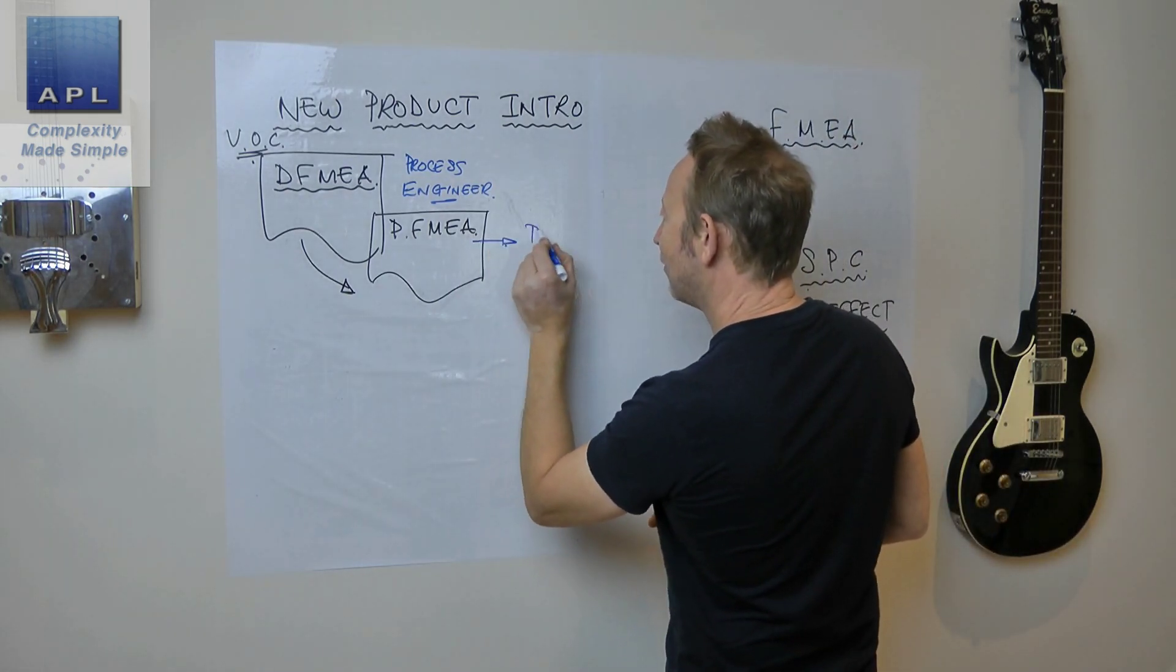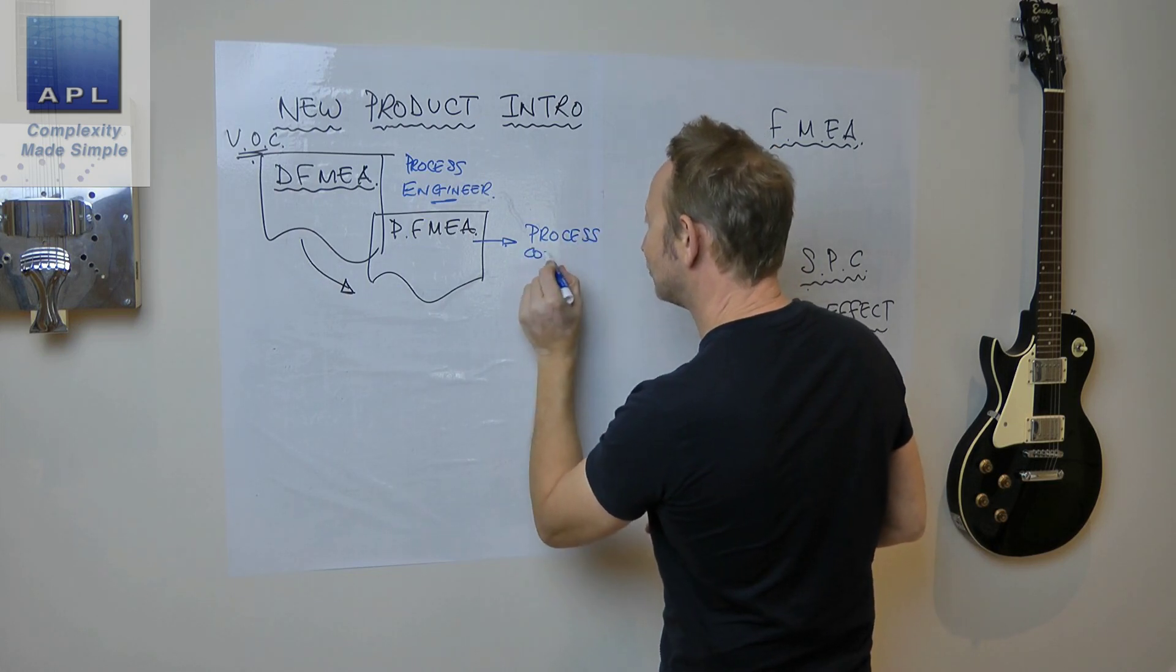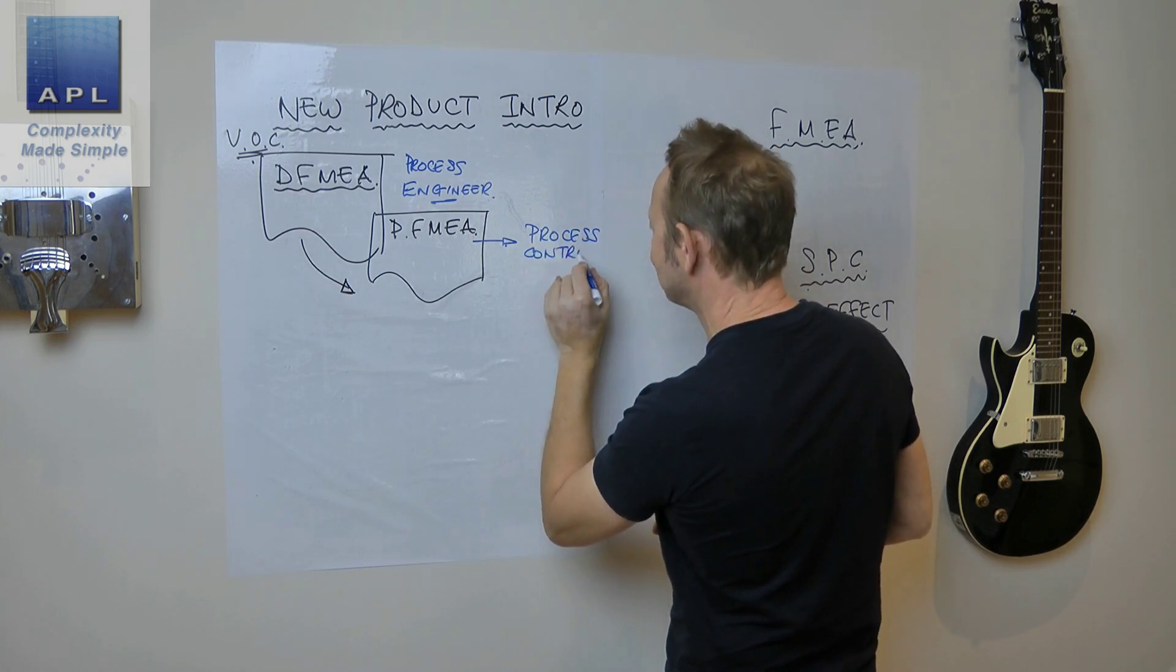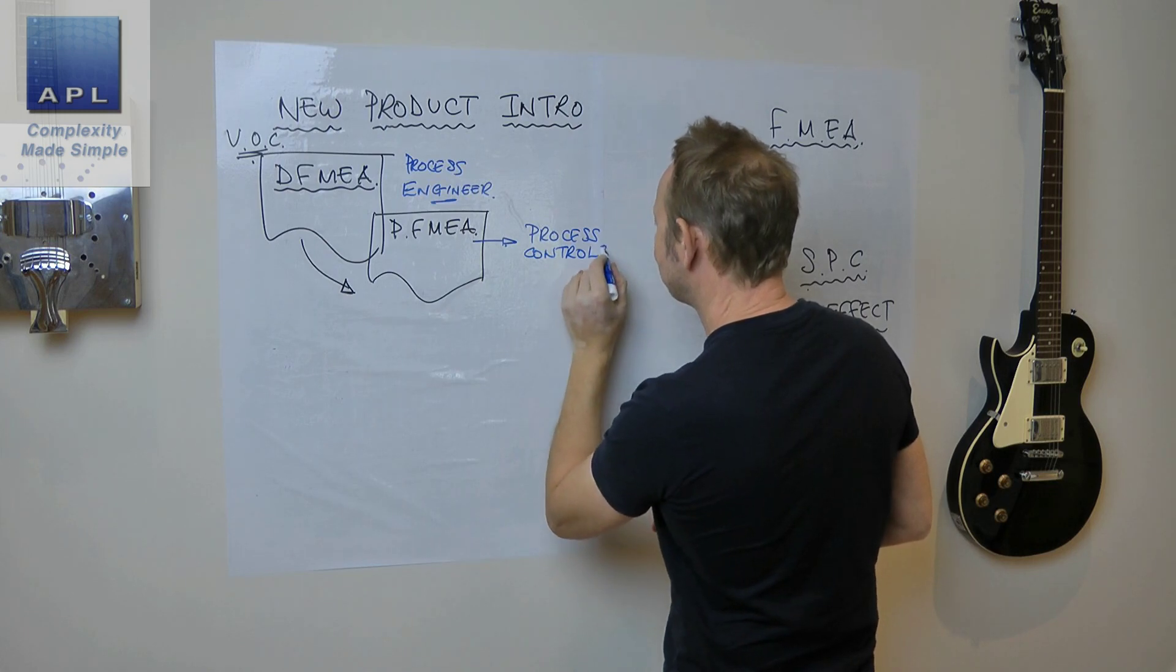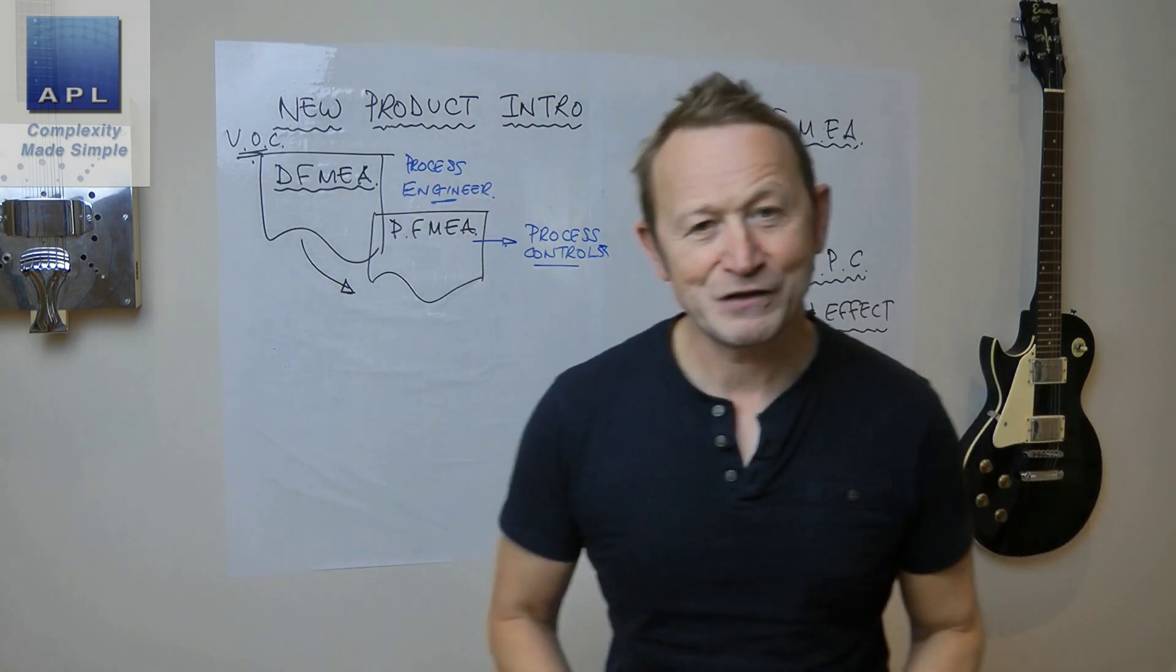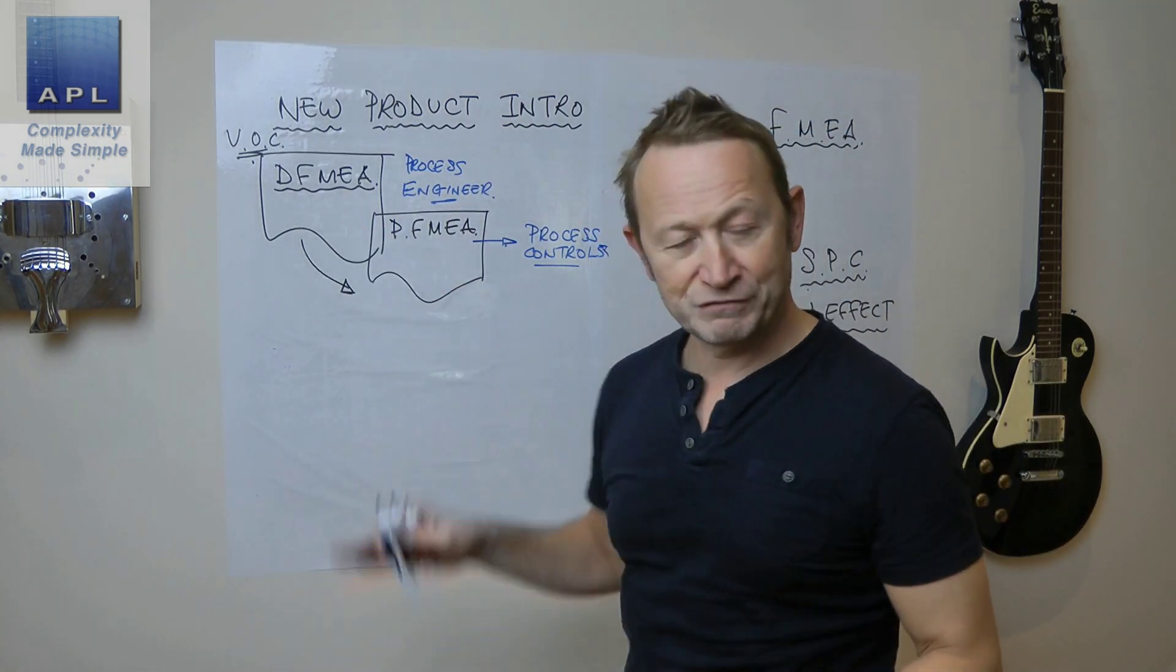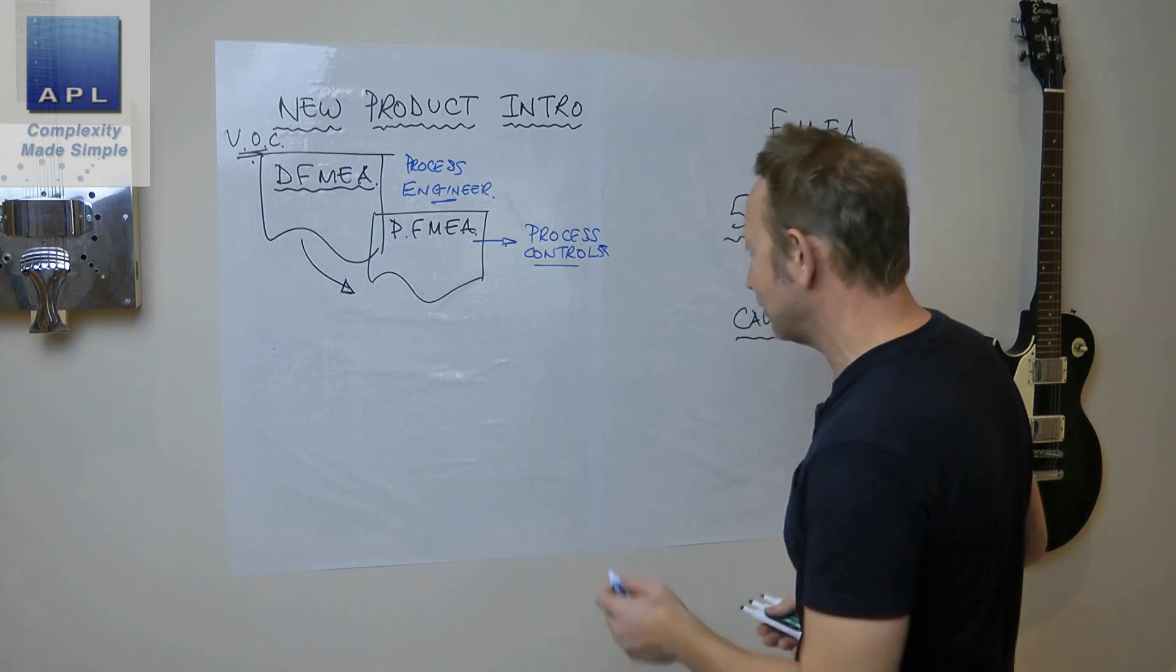What comes out of here are your process controls. A control plan should come out of this if it's done correctly. Once you've designed the process, you're going to move to doing real things. First thing you're going to do is a pilot run.